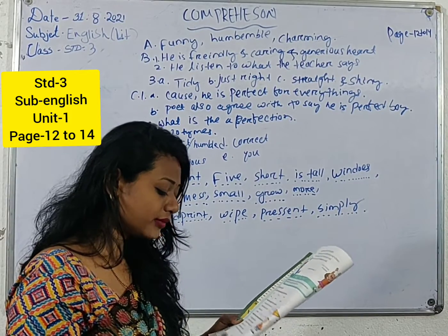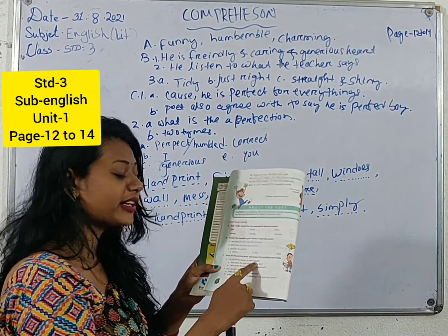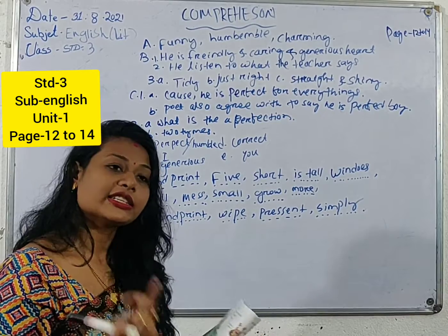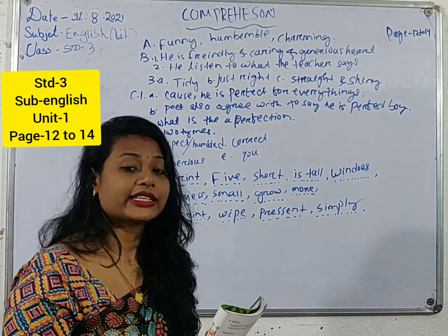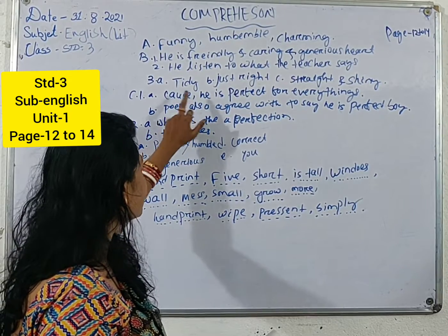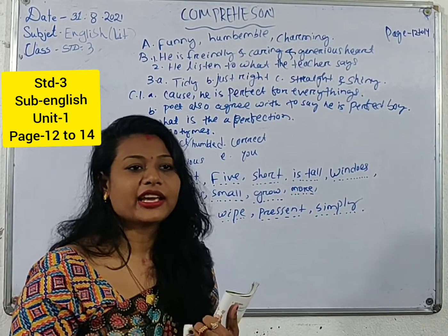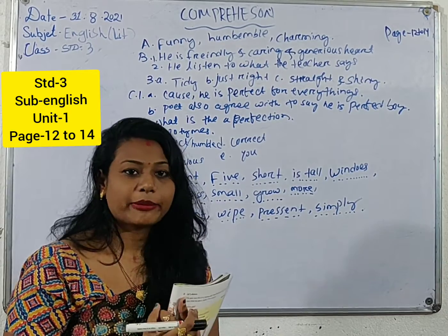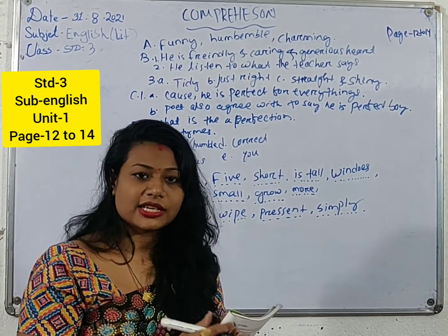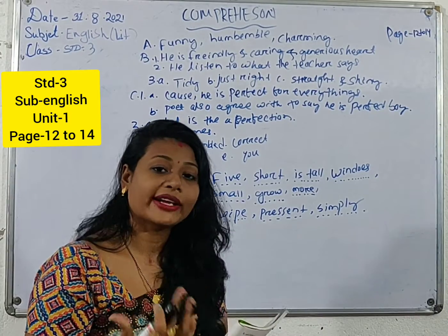Now come to section C. Read the lines given below and answer the questions that follow. First one: 'I am practically perfect in every respect.' Why does the poet say the above lines? He is perfect for everything — he is funny, friendly, generous, and charming. His hair is neat, his clothes are tidy, and his teeth are white.